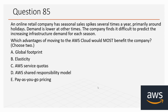Question number 85: An online retail company has seasonal sales spikes several times a year, primarily around holidays. Demand is lower at other times. The company finds it difficult to predict the increasing infrastructure demand for each season. Which advantages of moving to the AWS cloud would most benefit the company? Choose two. Options: A. Global Footprint, B. Elasticity, C. AWS Service Quotas, D. AWS Shared Responsibility Model, E. Pay-as-you-go Pricing. The correct options are B and E: Elasticity and Pay-as-you-go Pricing.